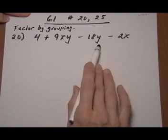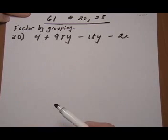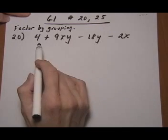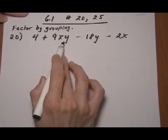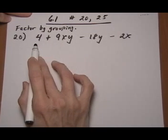Here we have four terms, which is usually what you're going to see when you want to factor by grouping. The first thing I notice is that if I group the first two terms together, 4 and 9xy, there's nothing in common for factors that I can pull out.